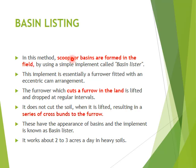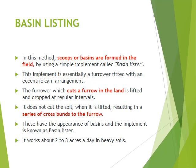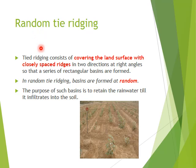The next one is basin listing. We have an implement called a basin lister. What this implement does is scoop the soil — like ice cream scoops — forming basins in the field. These basins are connected by a furrow. The furrow attachment is connected to the tractor at the same time, so whenever a furrow is needed it is dropped down to create a furrow in the soil. This is called the basin listing method. A basin lister can work about two to three hectares a day in heavy soils, and the basins help in both soil erosion control and water conservation.